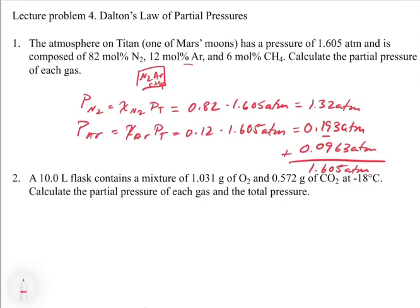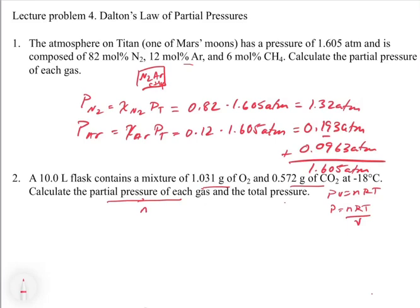The second problem: a 10-liter flask contains a mixture of 1.031 grams of O2 and 0.572 grams of CO2 at minus 18 degrees Celsius. Calculate the partial pressure of each gas and the total pressure. This is a bit tougher because we're given mass in grams. To get the partial pressure, we first need the number of moles. Once we have the moles, we can calculate pressure using P = nRT/V. Each individual gas does its own thing, so we apply PV = nRT separately for each gas, then add up the individual pressures to get the total.